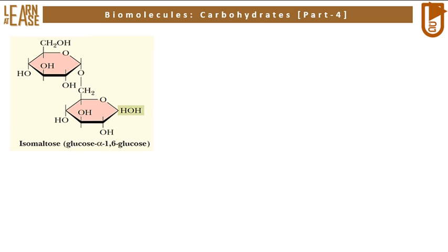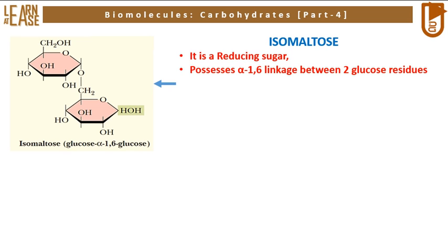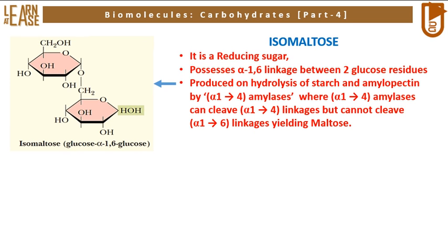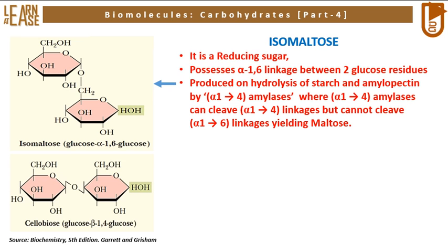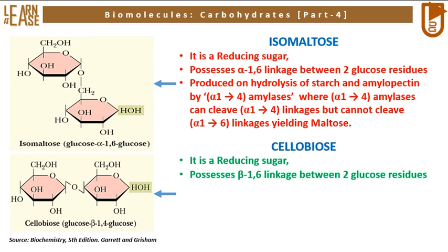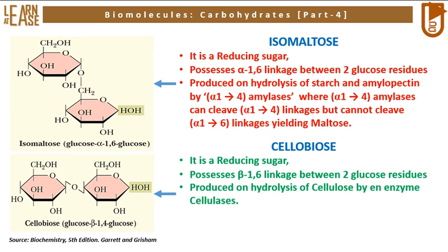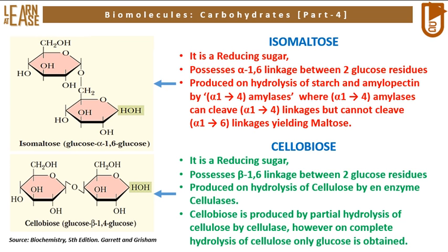Now let me show you the structure of two more disaccharides made of glucose residues: isomaltose and cellobiose. The first image on the left represents the structure of isomaltose. Key facts: isomaltose is a reducing sugar possessing an alpha-1,6 linkage between two glucose residues. It is produced on hydrolysis of starch and amylopectin by alpha-amylases, which can cleave alpha-1,4 linkages but cannot cleave alpha-1,6 linkages, yielding maltose. The second image represents cellobiose, a reducing sugar possessing a beta-1,4 linkage between two glucose residues, produced on hydrolysis of cellulose by cellulases. On complete hydrolysis of cellulose, only glucose is obtained.